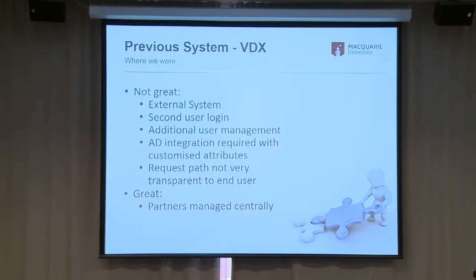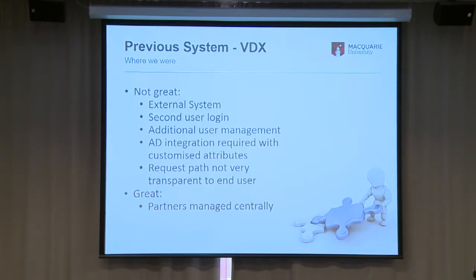However, some of the good things it does is that all the partners around Australia and New Zealand — about 1,200 partners — are all managed through the external system. So that's something we never really had to worry about before. The BDX system basically took care of the contact details for those people, what postal addresses were, and what changes more regularly is whether those people are suspended or not — in other words, whether they're offering resource sharing services or not. And that changes on a pretty much daily basis for some organizations.